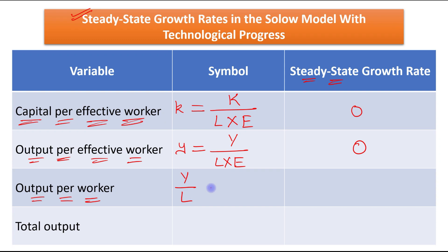Next we have output per worker. Output per worker is total output divided by total labor. We can calculate its value from the equation: y/L equals small y times E. In the steady state, small y — output per effective worker — is constant, and the efficiency of labor grows at a rate of g.